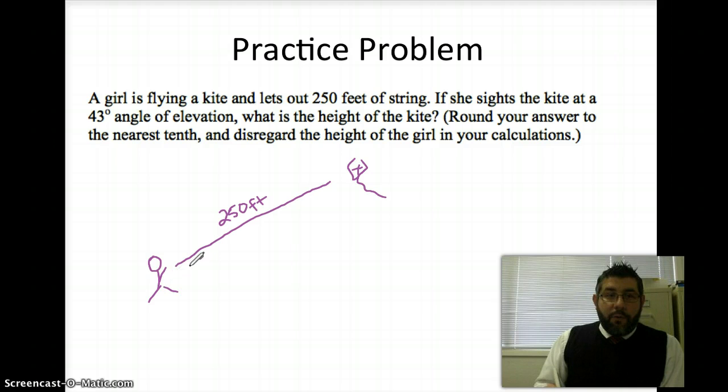She sights the kite at a 43 degree angle of elevation. So, this is our 43 degree angle here. It's our angle of elevation. And we're going to go straight down from there. What is the height of the kite? We're going to say that this 43 degrees is going to be from the ground. So, we're really only looking for here. Actually, in reality, we'd want to know how high her eyes are. But in this case, we're just looking for this because they don't give us this. It says, disregard the height of the girl.